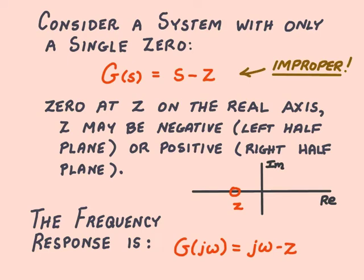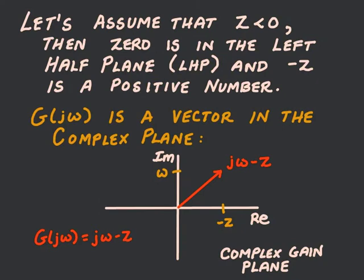To start us off, we'll consider a system which has only a zero. So g of s will be equal to s minus z. Now of course this system is improper — we're only using this as a way to understand how a zero affects the frequency response. The zero in this case is at z on the real axis in the complex plane, and this value z may be either positive or negative. So if we want to find the frequency response, we'll replace s by j omega, and then g of j omega will be equal to j omega minus z. J omega minus z is a complex number, and so we can plot it in a complex plane, finding the magnitude as the length of the vector j omega minus z.